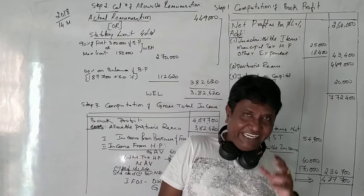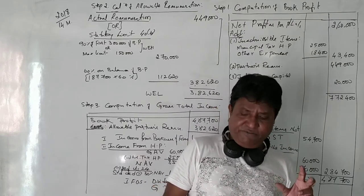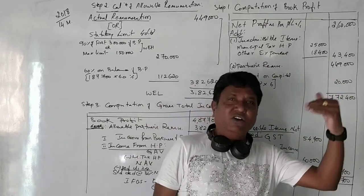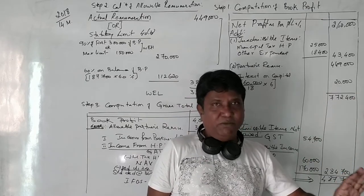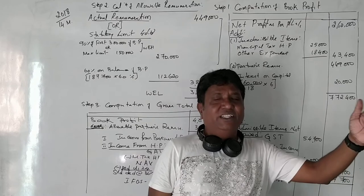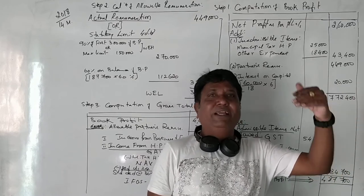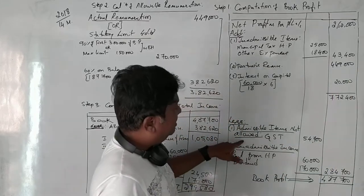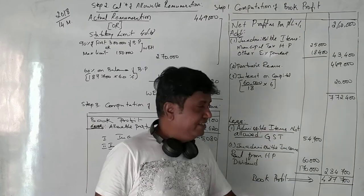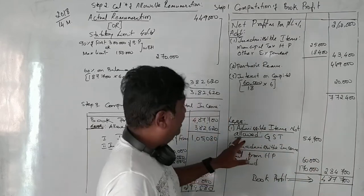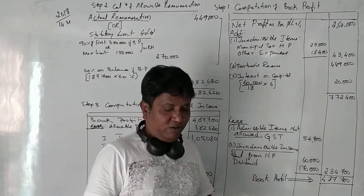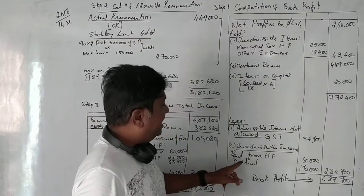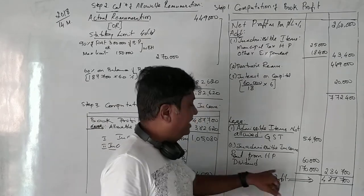It means our previous year is 18-19. There was 54,700 rupees of GST liability which was not deducted, which was not taken in the previous year's profit and loss account. That means previous year's profit and loss account, there was more profit, they paid more taxes. But that GST has been paid in this previous year. So whatever the GST paid last year's in this year, this has to be minus from the admissible items not allowed.